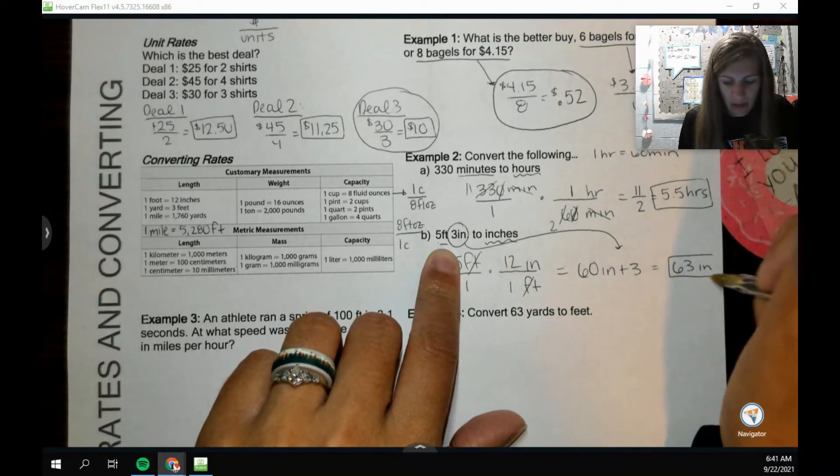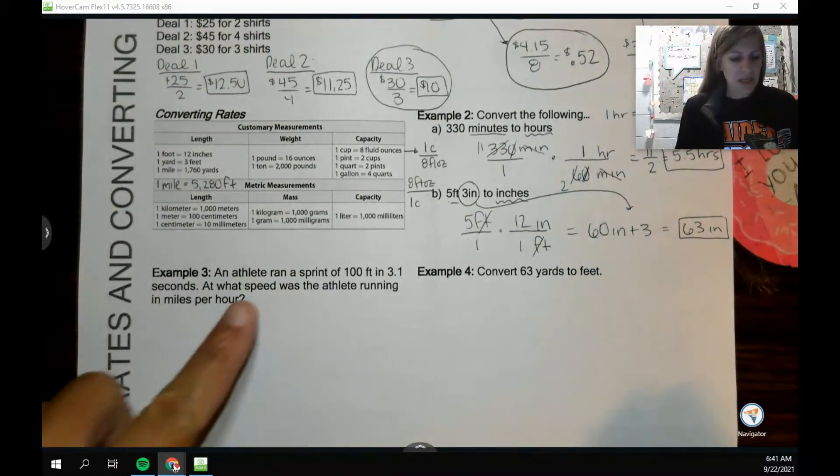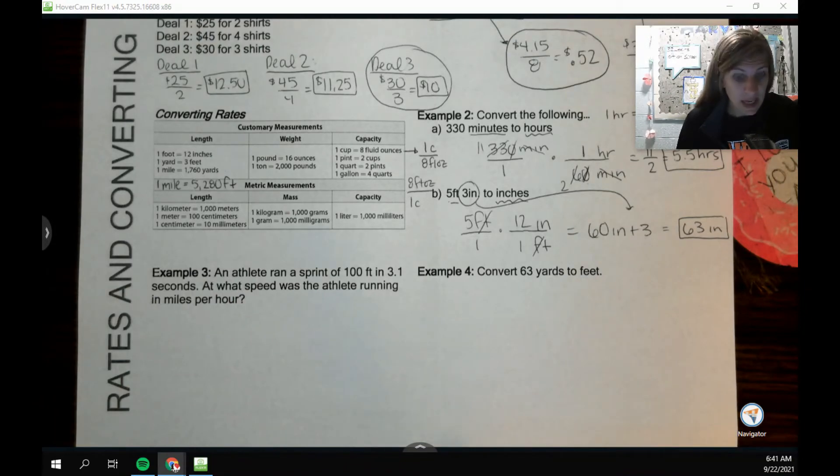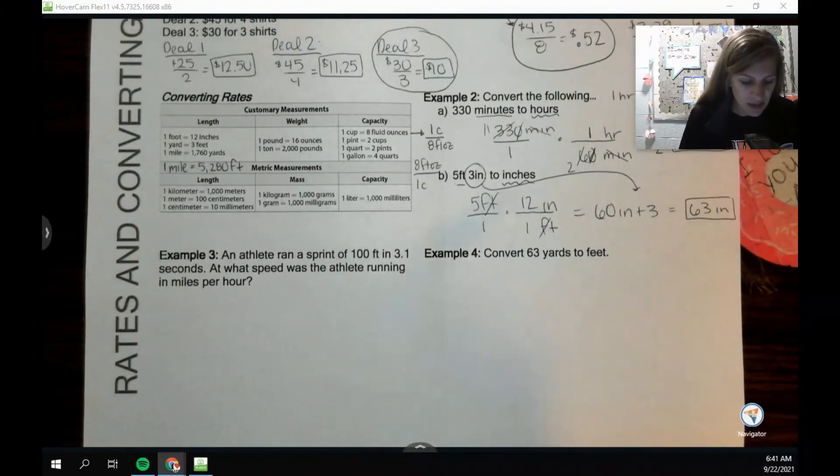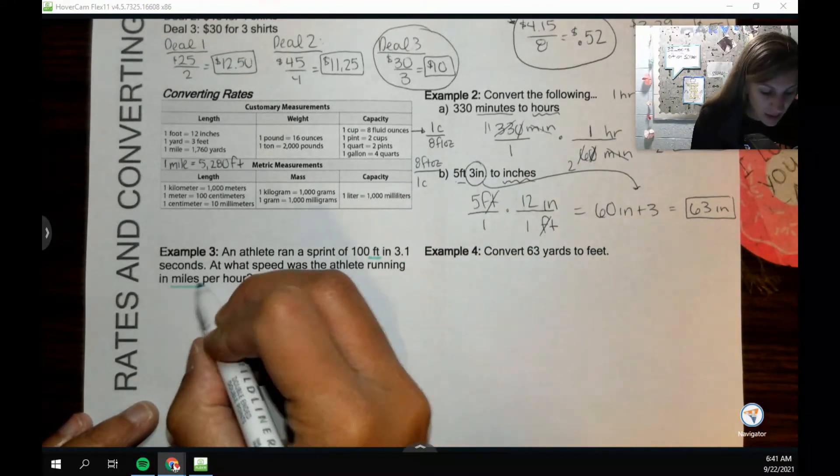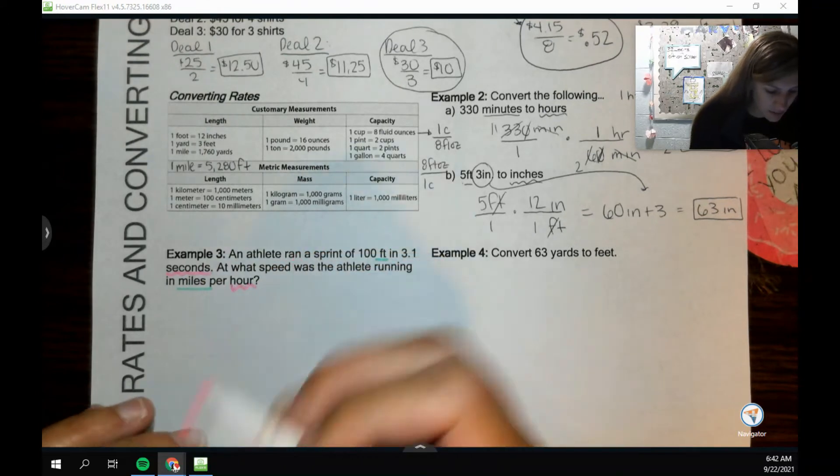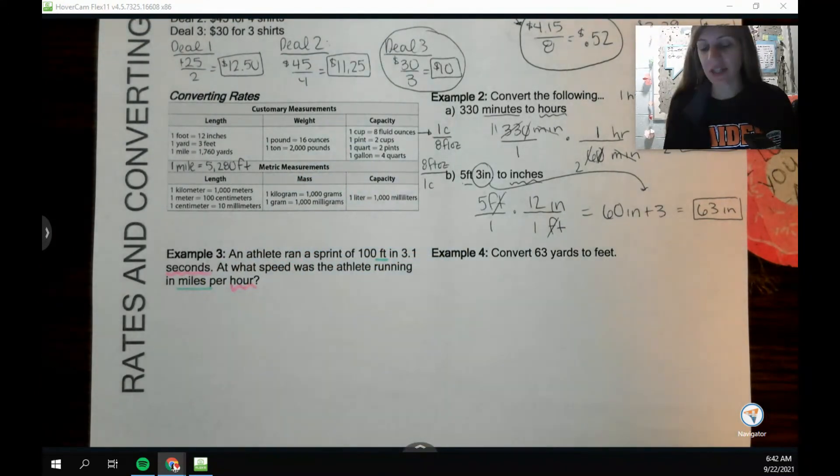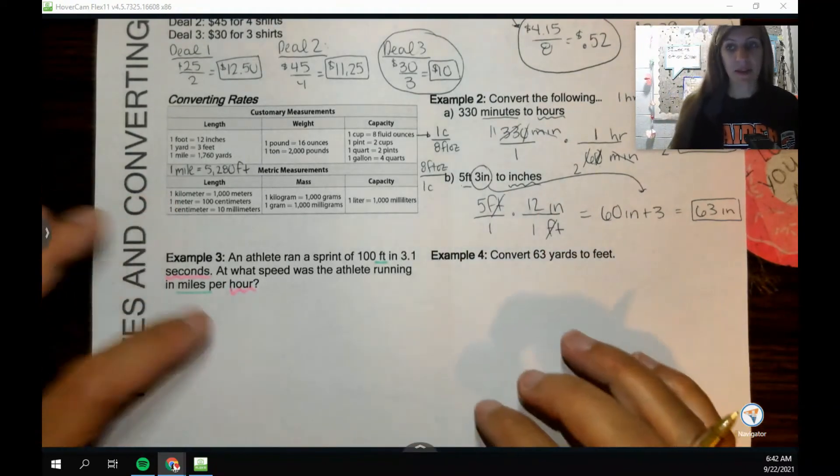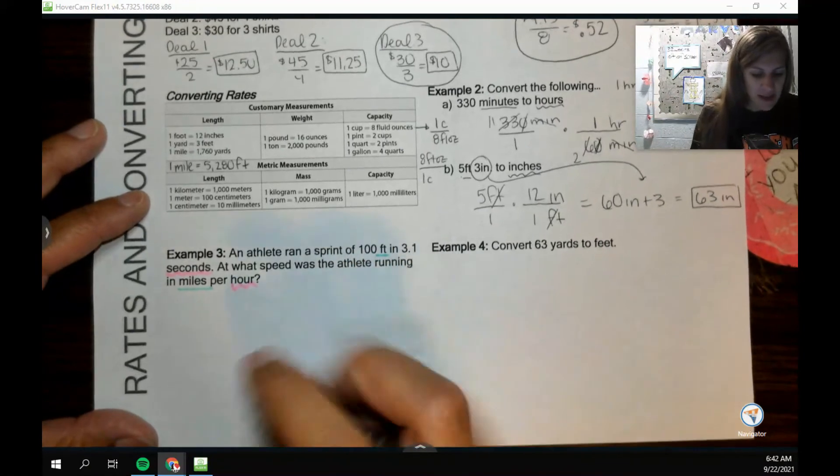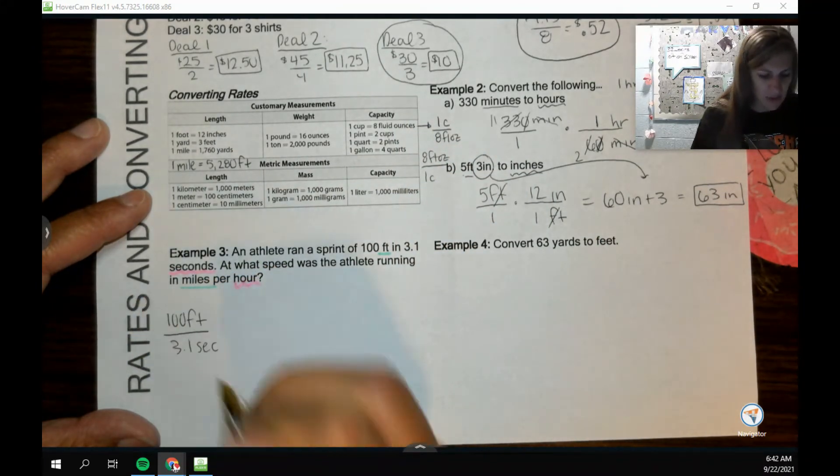This next one here is a little bit more intense. If I have an athlete that ran a sprint of 100 feet in 3.1 seconds, at what speed was the athlete running in miles per hour? The reason that this one is slightly trickier is because we're trying to take feet to miles, but I'm also trying to take seconds to hours. I'm taking two units and converting them to two other units. I can still start with the units that they give me. So 100 feet over 3.1 seconds.